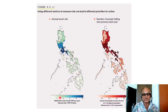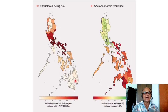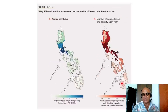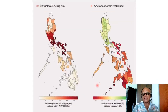Some regions with low risk in the asset metric become high risk in the poverty metric, and vice versa. Further, if you look at annual well-being risk — well-being losses, national total PHP 167 billion — different regions light up. And if you use socioeconomic resilience, then regions that haven't lit up in the other metrics at all become prominent, while others go down.